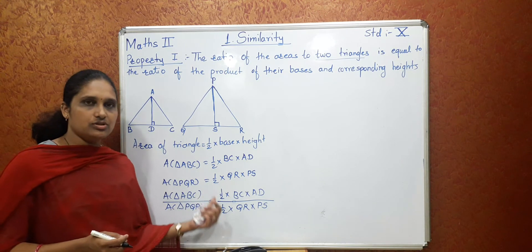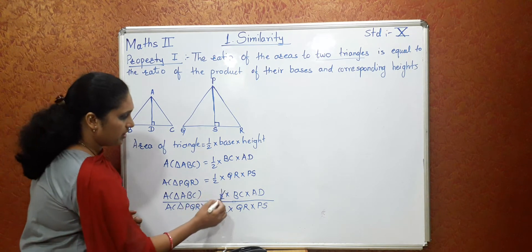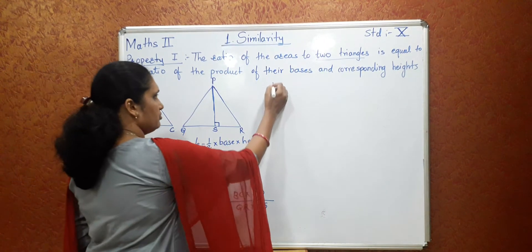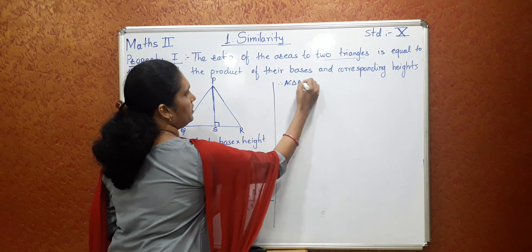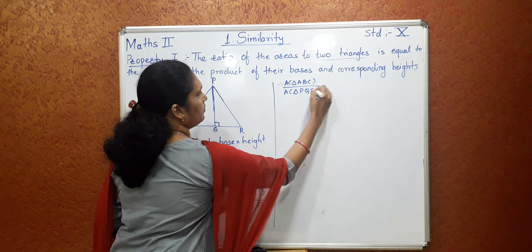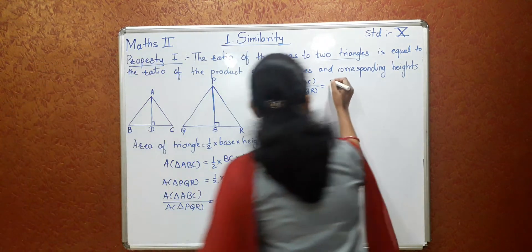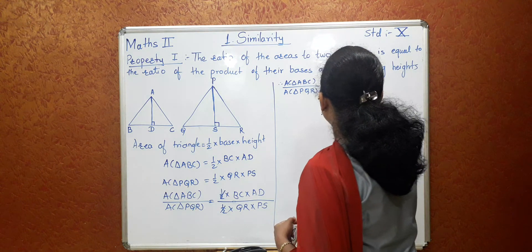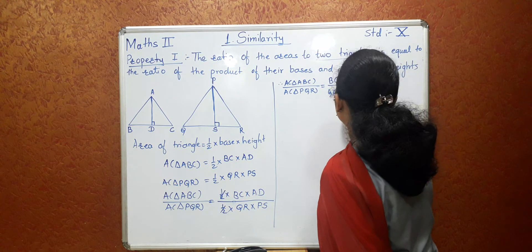Now if you observe the ratios, similar terms are there or same terms are there that can be cancelled. Now the remaining terms we will write here. So what is remaining? Area of triangle ABC upon area of triangle PQR equal to BC into AD whole upon QR into PS.